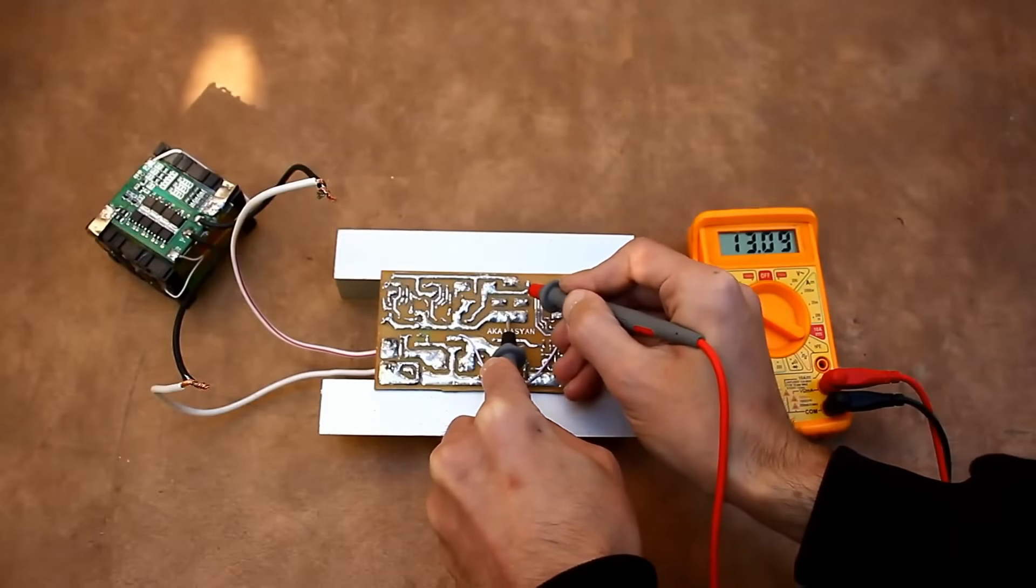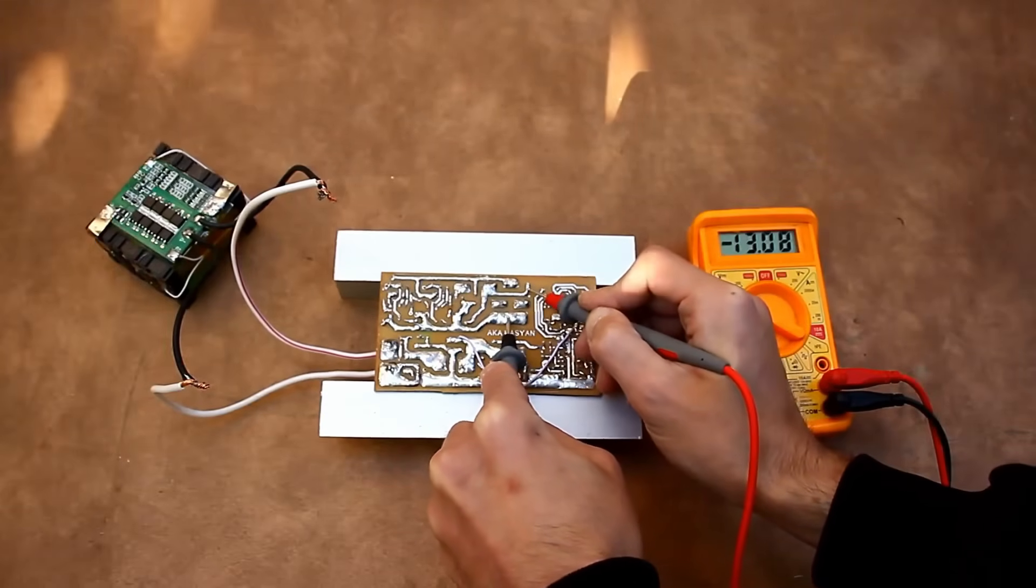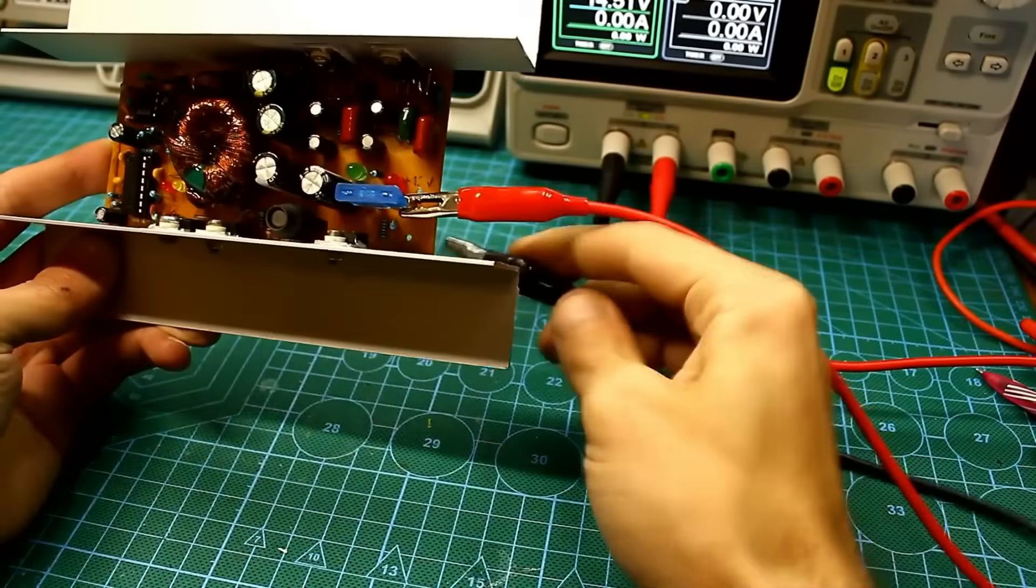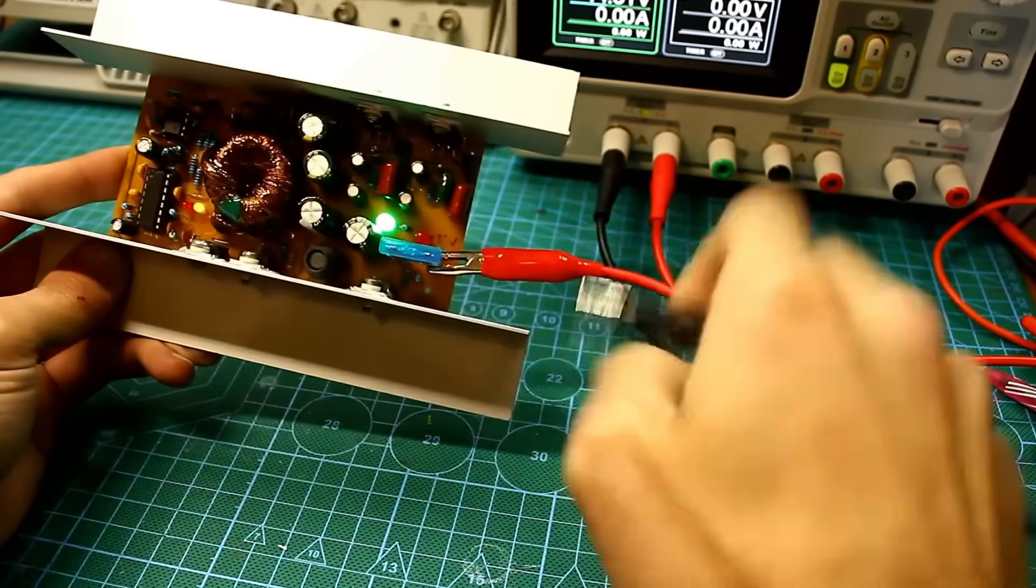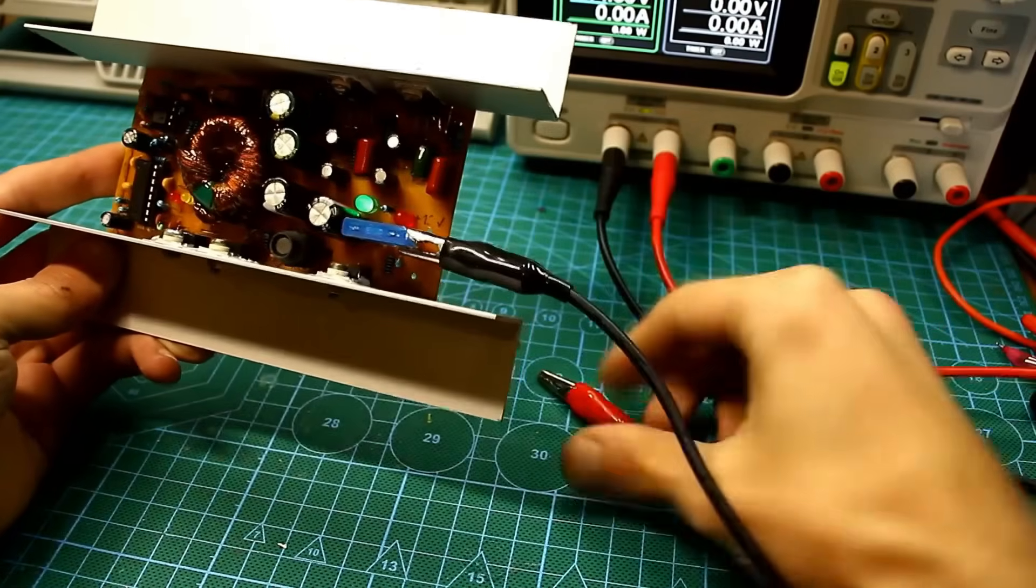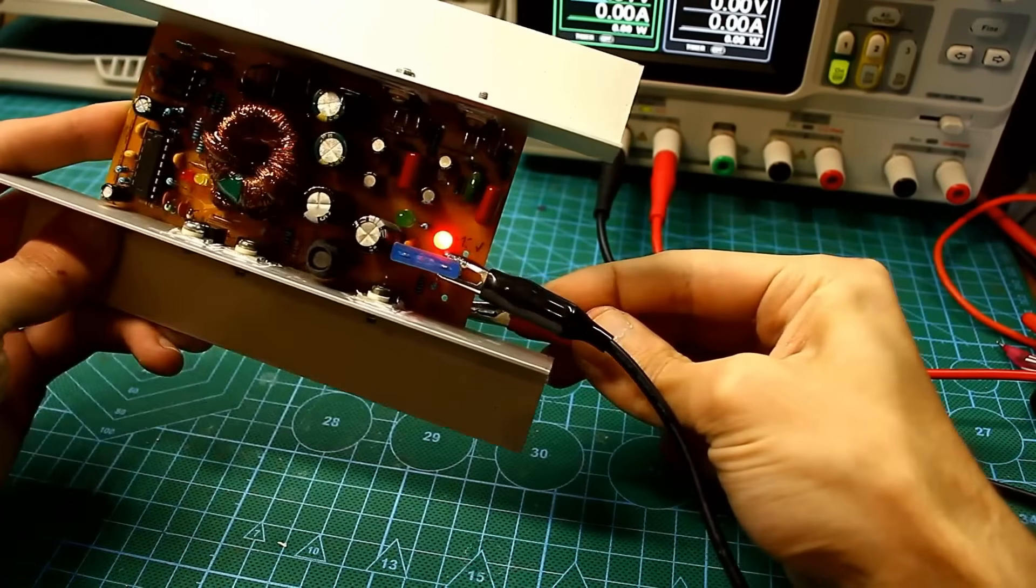It precisely boosts the standard 12 volts to the required value. In this case, the output voltage is dual polarity, 14 volts. The circuit is also equipped with reverse polarity protection, which is based on a powerful field effect transistor and will prevent the circuit from burning out if you accidentally reverse the polarity of the connection.